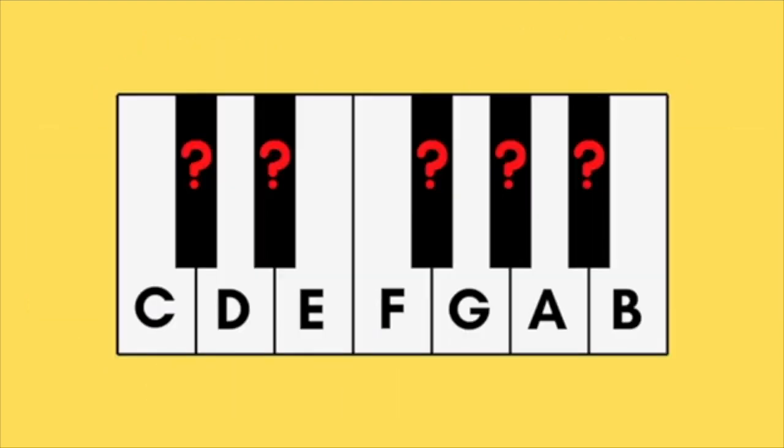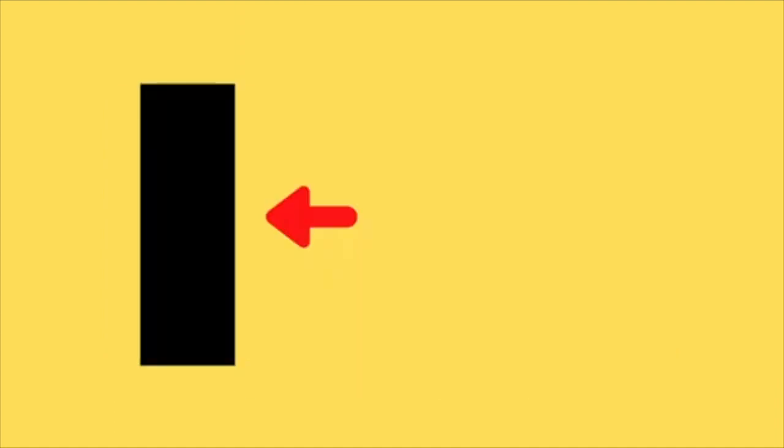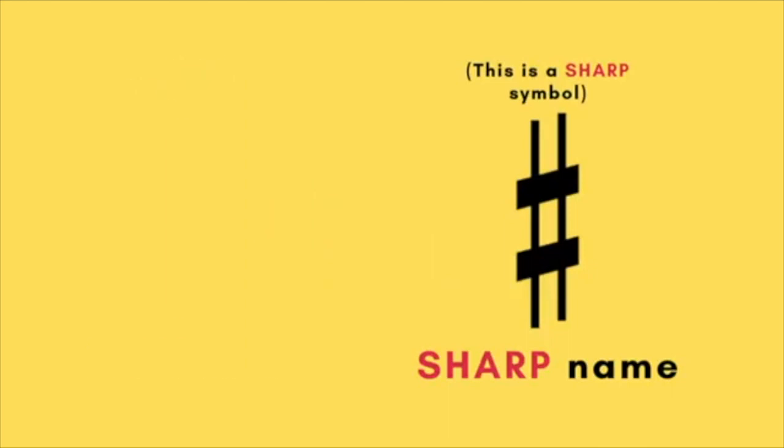What about the black keys? Well, the black keys are our in-between notes, and each black key has two names: a sharp name and a flat name.